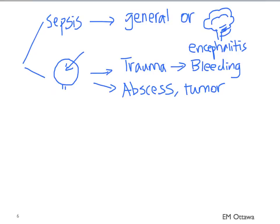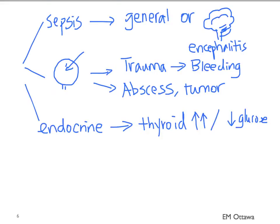Endocrine causes can include thyrotoxicosis or hypoglycemia. Environmental causes can include heat stroke.